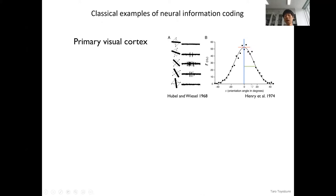If a bar is oriented along the preferred direction of the cell, then the response is high. And when the stimulus bar is tilted away from the preferred orientation, then the response decreases.